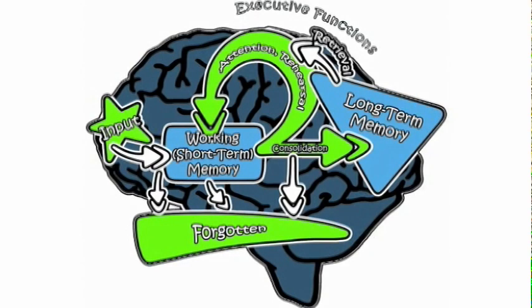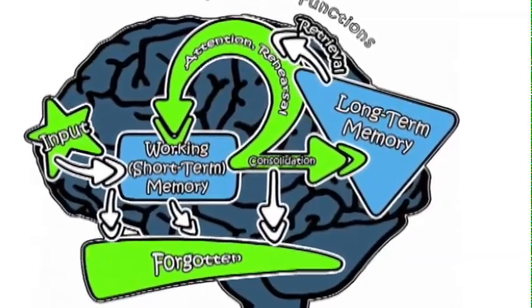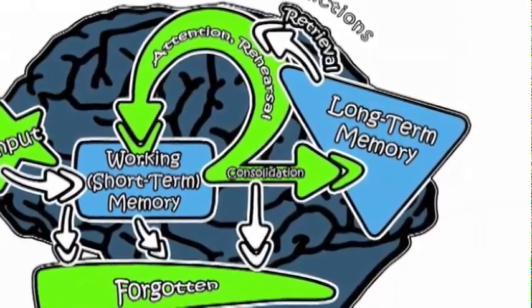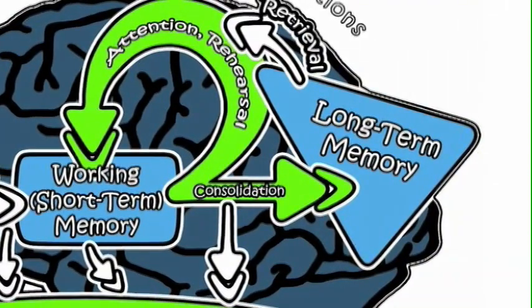The conversion of new information from short-term memory to long-term memory requires a very important process, and this process is called consolidation. As suggested by the information processing model, consolidation is a complex process involving the comparison of new information in short-term memory with previous knowledge through the retrieval of related information from long-term memory. Virtually no new information is consolidated without first comparing it to information that we already have.